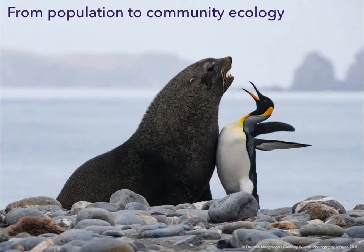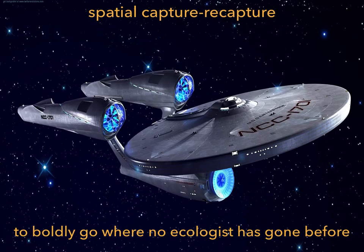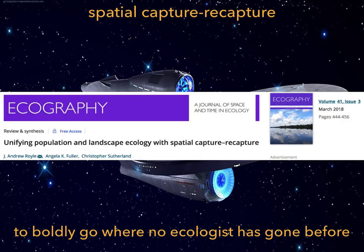From an ecological point of view, we need to think of species in their ecosystem to better understand and better protect them. This means going from population ecology to community ecology and studying interactions. We are currently working on multispecies integrated population models that might help doing just that. Another avenue of research is spatial capture-recapture models and how to infer home ranges — and these spatially explicit capture-recapture models can and will help doing so much more. For a recent overview, I recommend this paper by Andy Rowe and colleagues published in Ecography.